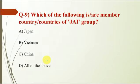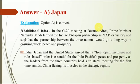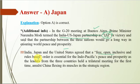Question 9: Which is a member country of the JAI group? The correct option is A — Japan. At the G20 meeting at Buenos Aires, Prime Minister Narendra Modi termed the India-US-Japan partnership as the JAI group — J for Japan, A for America, I for India. This grouping reflects that India, Japan, and the USA agreed that a free, open, inclusive, and rules-based order is essential for Indo-Pacific peace and prosperity. Leaders from the three countries held a trilateral meeting for the first time amid China flexing its muscles in the strategic region.